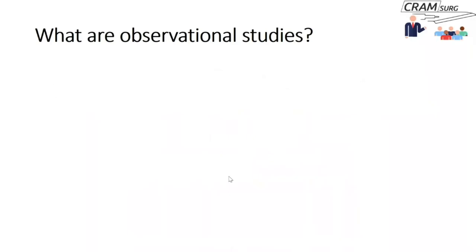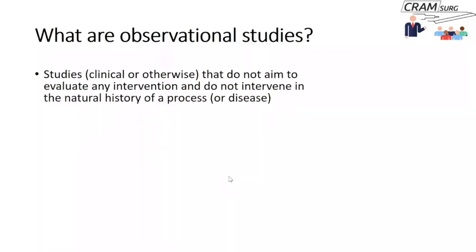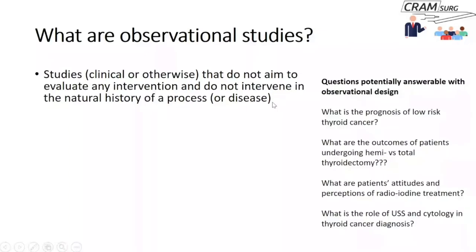Let's talk about what observational studies are. There's a separate tutorial on observational studies and study designs on YouTube, so you might want to have a quick look at that. Essentially, these are studies that do not necessarily aim to evaluate an intervention and do not intervene in the natural history of the disease — they are simply observational processes. For example, in thyroid surgery: what is the prognosis of low-risk thyroid cancer? That's going to be an observational study.